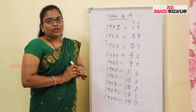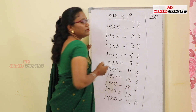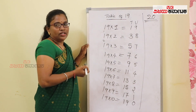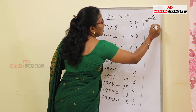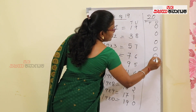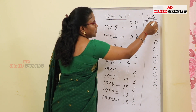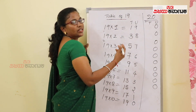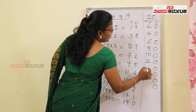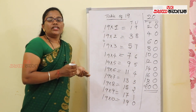Now the 20th table — no special tricks are needed for this one. For the 20th table, in the units place write 0 all ten times: 0, 0, 0, 0, 0, 0, 0, 0, 0, 0. In the tens place, write even numbers: 2, 4, 6, 8, 10, 12, 14, 16, 18, 20. So this is the 20th table result.